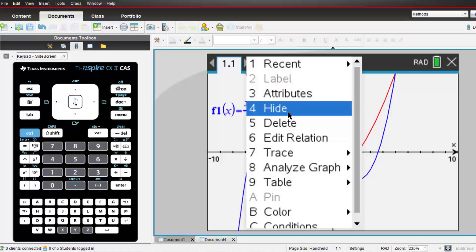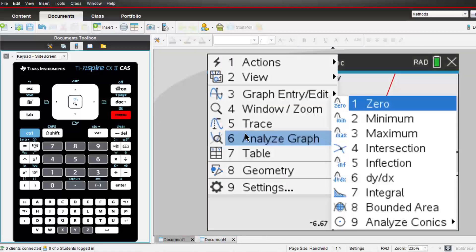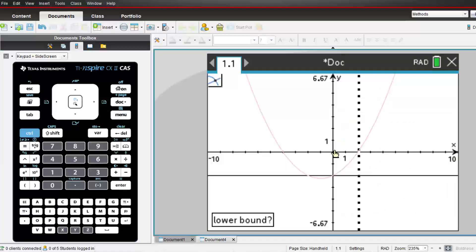We need to know when the gradient function is less than negative 2. So I'll draw a line at negative 2. Then we can find the points of intersection where this line crosses our gradient function.